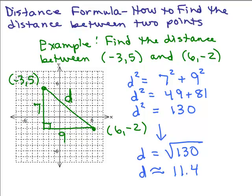If you want to find the distance between two points, you don't always want to get out graph paper and do it this way, so it would be nice to have some sort of formula — especially if the numbers are really large. One other point you can write down is the point at the right angle. It has x-coordinate negative 3 and y-coordinate negative 2 — notice it's the x-coordinate from one point and the y-coordinate from the other.